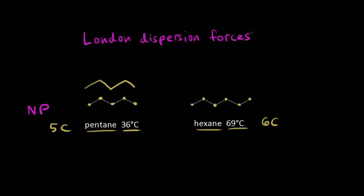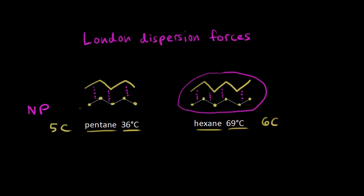London dispersion forces are the weakest of our intermolecular forces. They're attractions between molecules that only exist for a short period of time — transient attractive forces between these two molecules of pentane. Hexane is a larger hydrocarbon with more surface area, and more surface area means more opportunity for London dispersion forces, so there's even more attraction between two molecules of hexane. That increased attraction means it takes more energy for those molecules to pull apart, meaning an increased boiling point. So as you increase the number of carbons in your carbon chain, you get an increase in the boiling point of your compound.